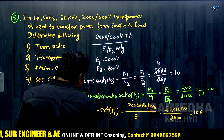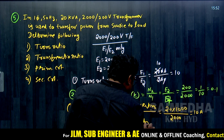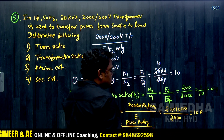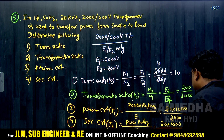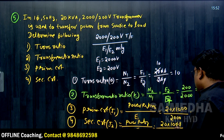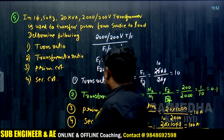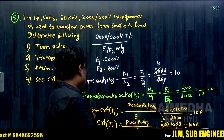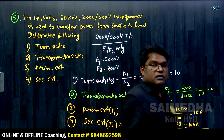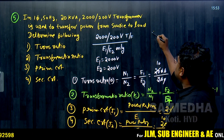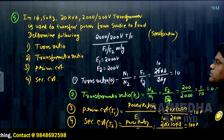For the secondary current I2: power rating divided by secondary voltage = 20 × 1000 divided by 200 volts = 100 amps. So the secondary current is 100 amps. From this specification, we determined the turns ratio, transformation ratio, primary current, and secondary current.